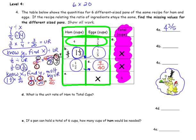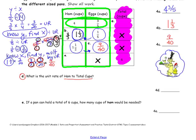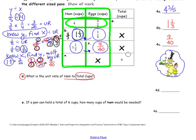So our answer for 4B was 1 and 1 third, and our answer for 4C is 9 fortieths. Now we are on 4D: what is the unit rate of ham to total cups? We need to know a number for total cups in order to calculate the unit rate, so we go back and uncover the column. We need to find the total cups for one of the pairs — it doesn't matter which pair you use.